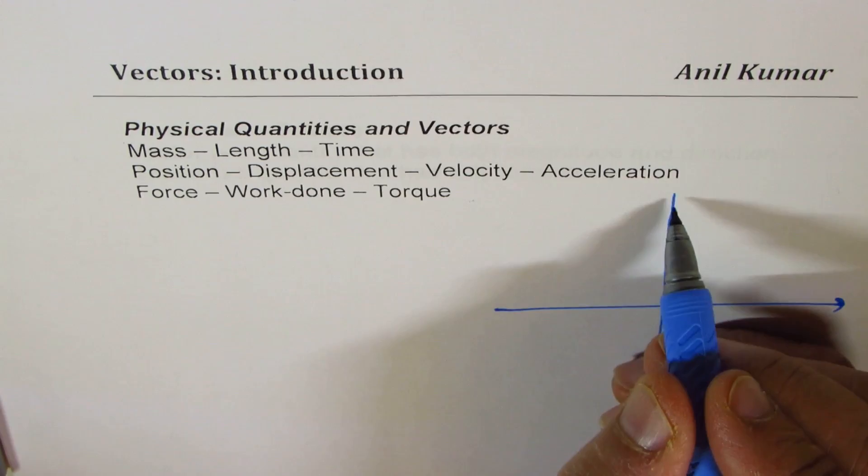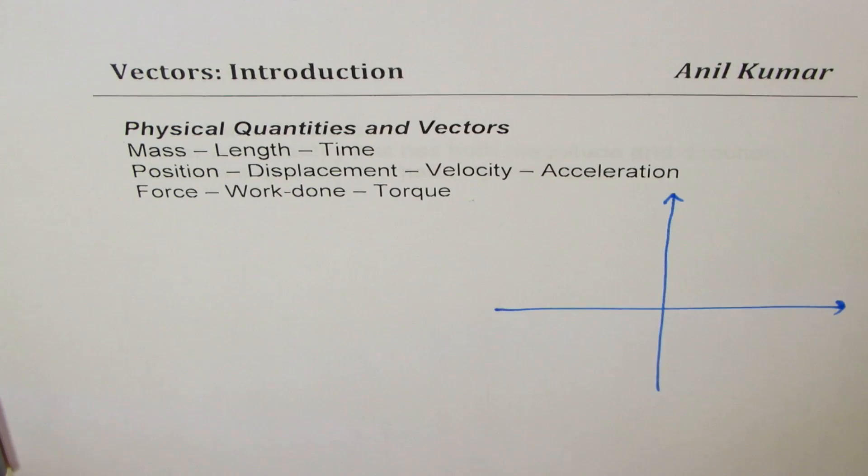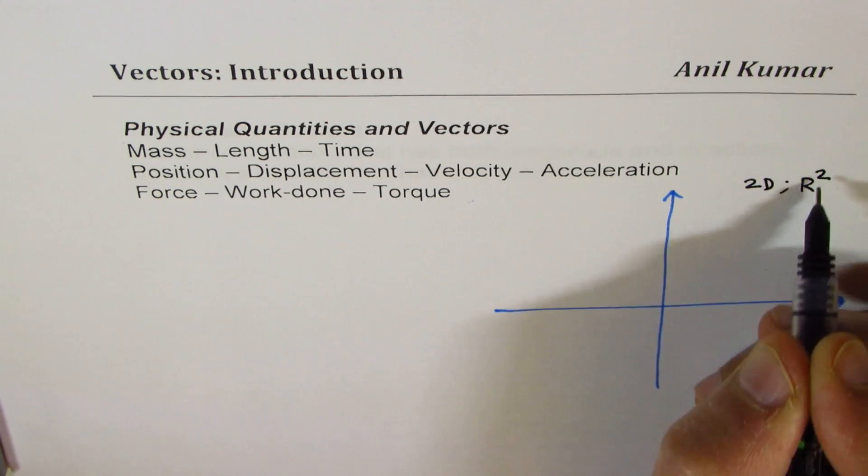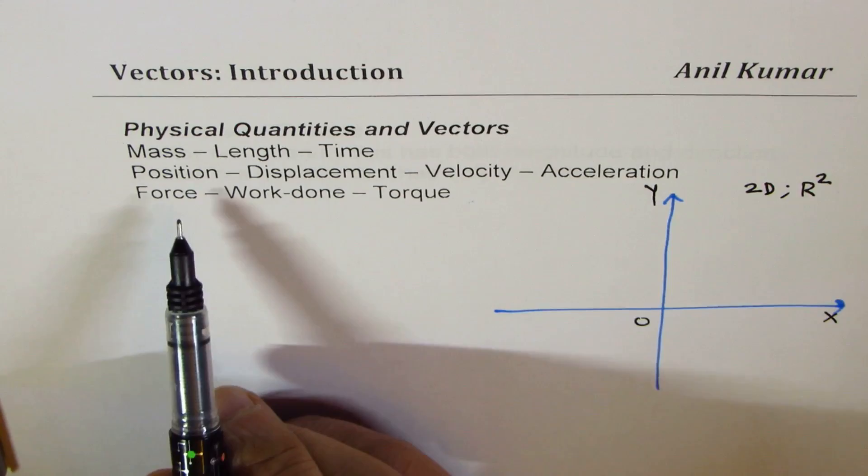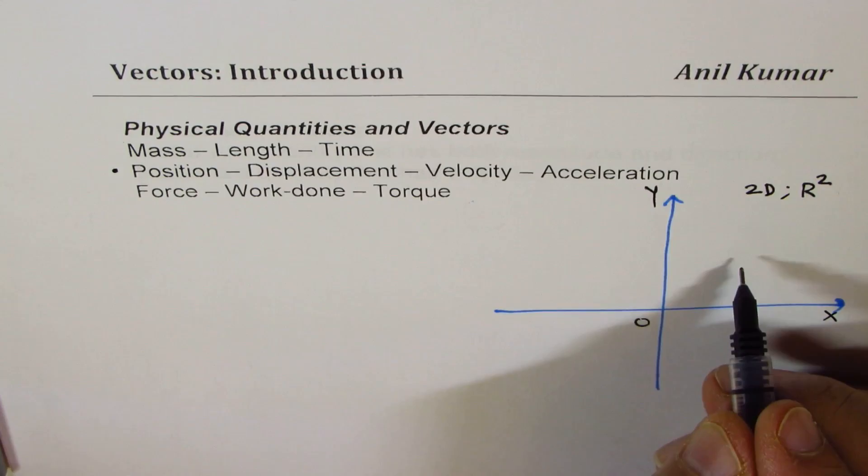So this is our Cartesian plane — we're talking about two dimensions, sometimes written as R2. We have the X and Y axes and the origin. When I say position, position really means identifying where a point is.